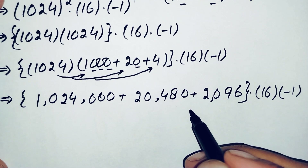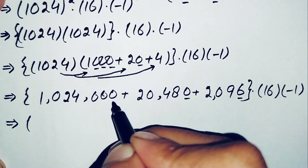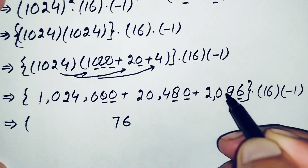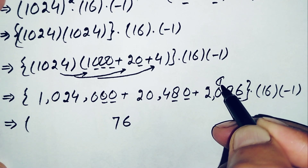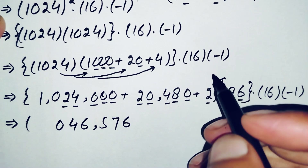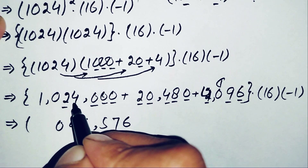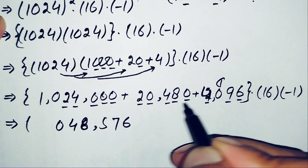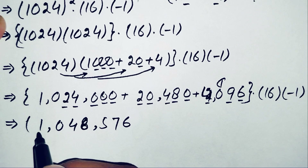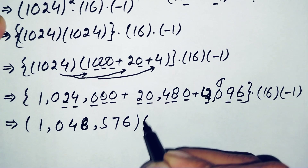We add these three numbers. Starting from the ones: 6+0+0=6; 9+8+0=17, write 7 carry 1; 0+4+1+1=6 — correction, noting a digit error, 4+0+4=8; 2+2=4; then 0 and 1. The sum of 1,024,000 plus 20,480 plus 4,096 gives 1,048,576. Now we multiply by 16, rewriting 16 as 10 plus 6.